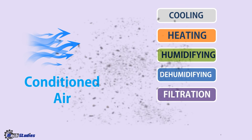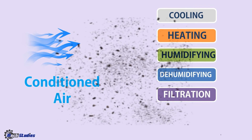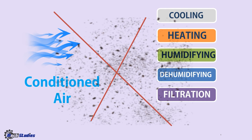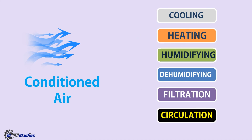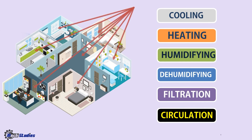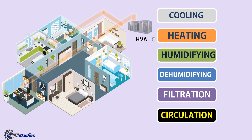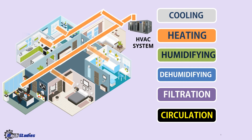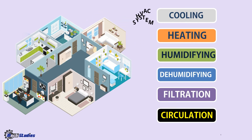Filtration - the air taken into the system may contain various dust particles and other unacceptable foreign particles which need to be removed. A series of filters are used in air conditioning systems for filtration. Circulation of air - in a building with various rooms, there should be a process of air circulation to each room. Ducting systems are used for the circulation of air into the rooms or conditioned areas. In small air conditioning systems, ducting is not required as each room will have its own air conditioner.